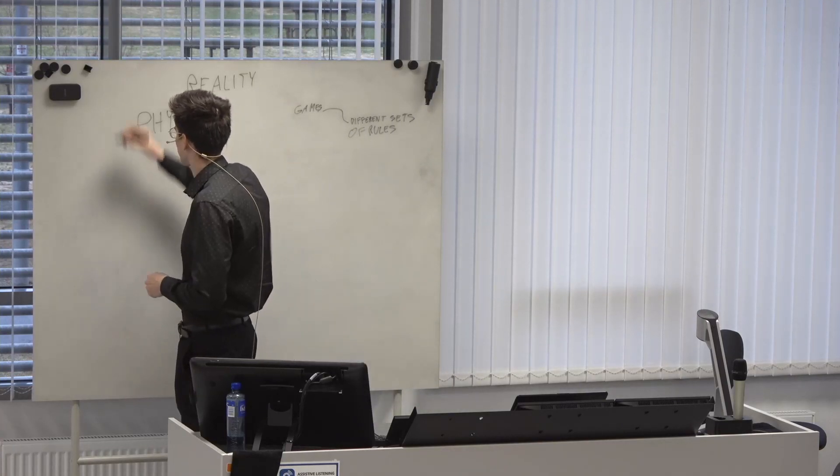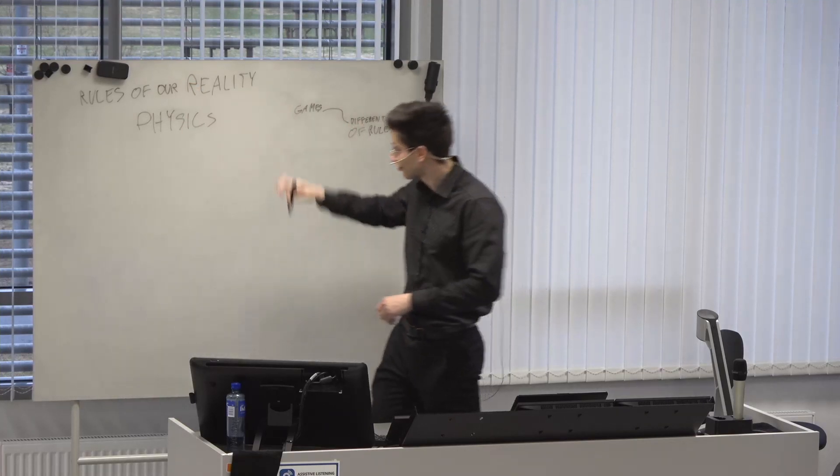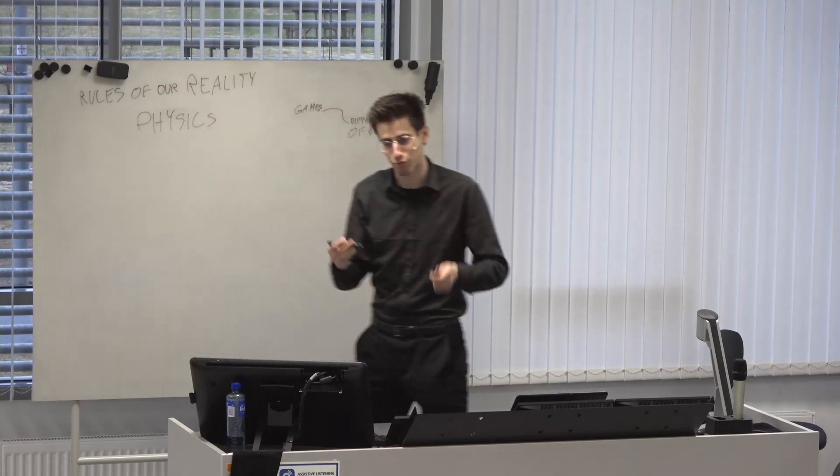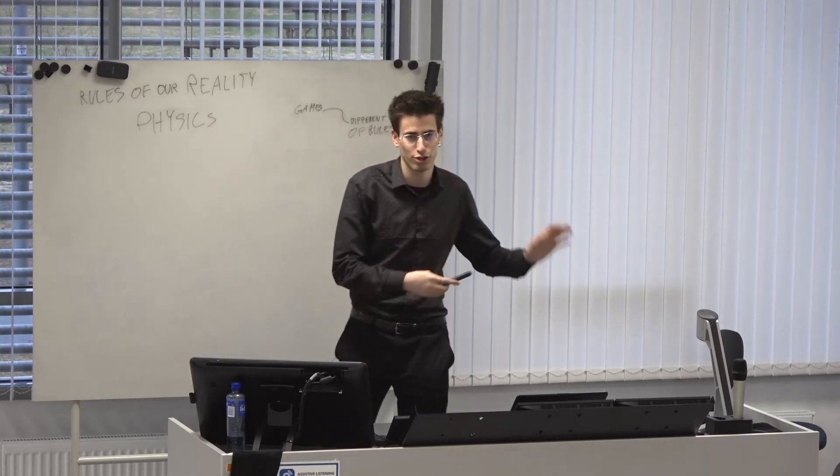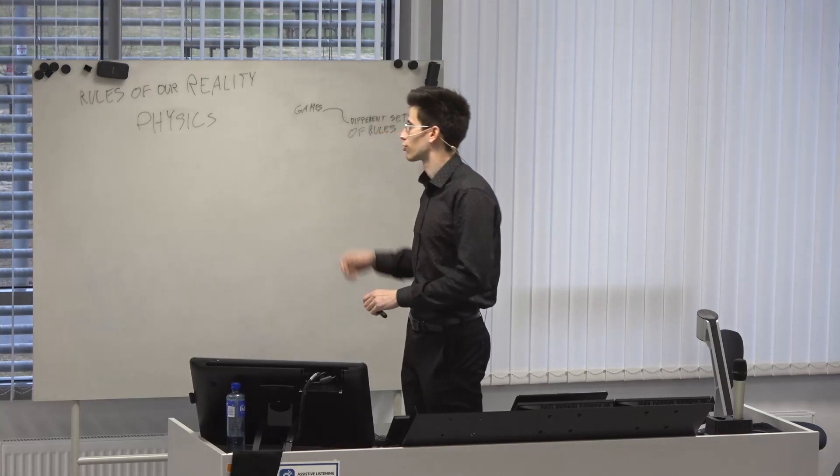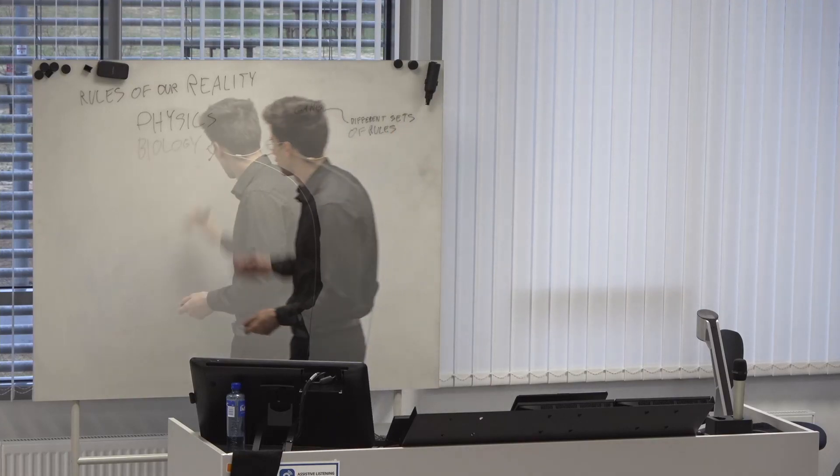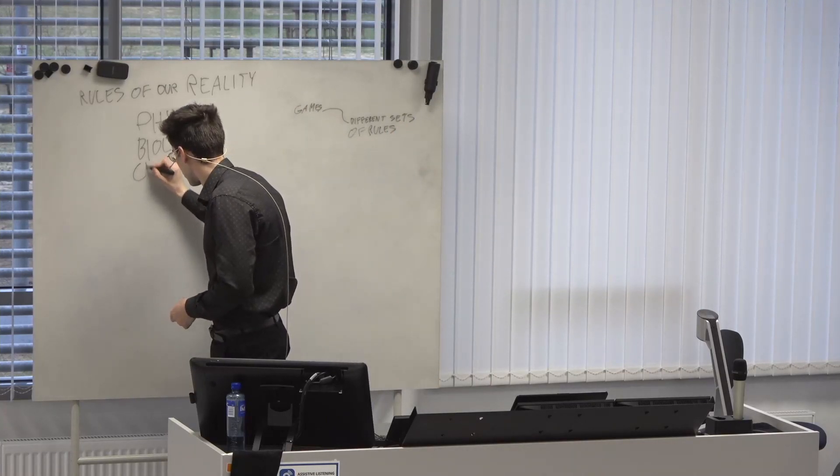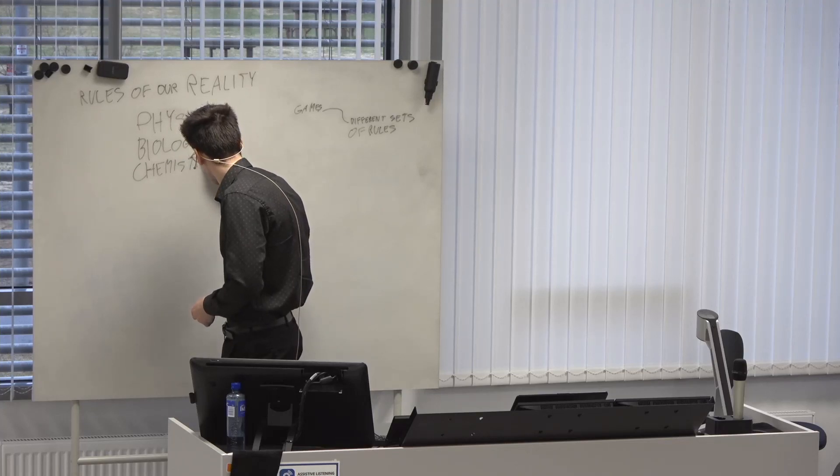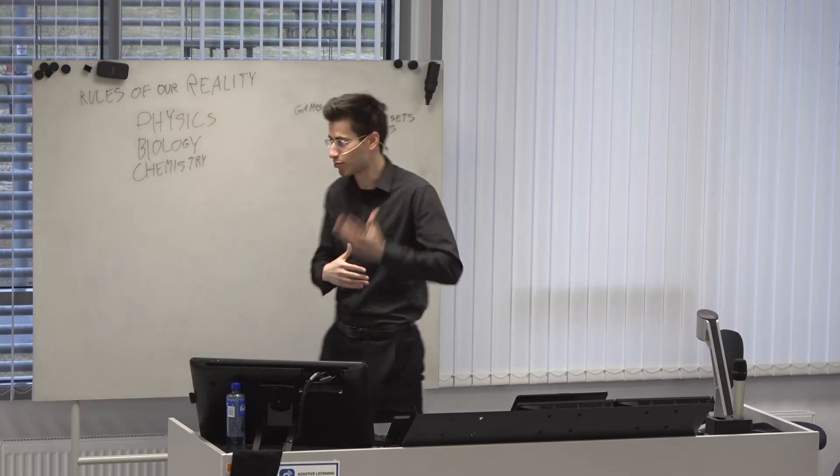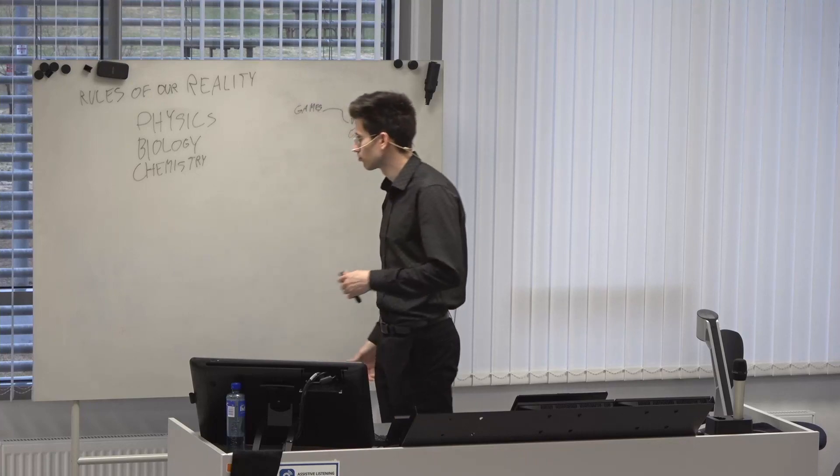Here we can write rules of our reality. Physics is one of the rules. Physics involves everything from the atoms to motion to energy. You also have biology and chemistry - the three big science academic disciplines.